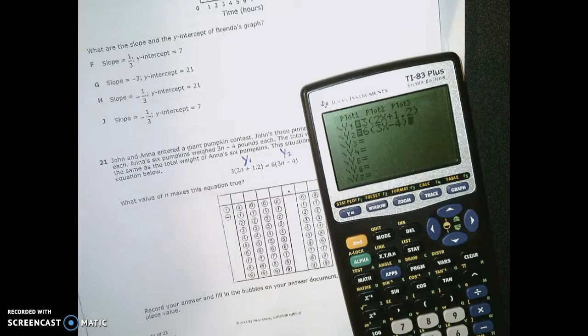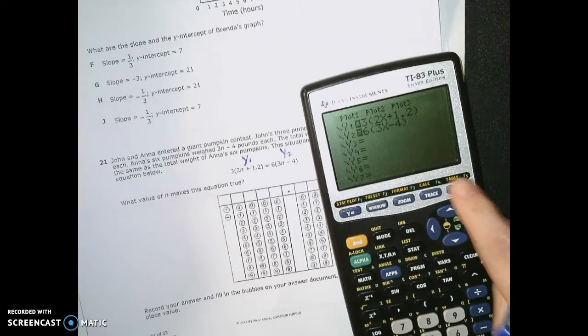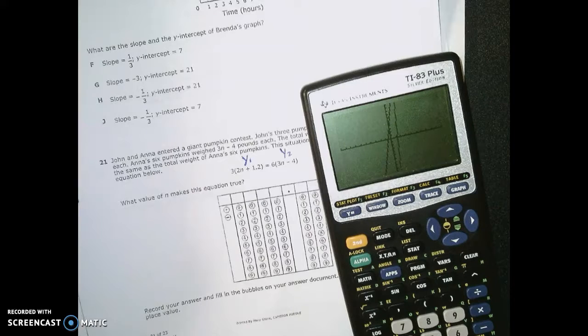So I've got the equation in, and now I've got y1, y2, why not. I'm going to go to graph. Now if you're looking at my graph, do the lines cross? They don't. They have to cross. You've got some options.